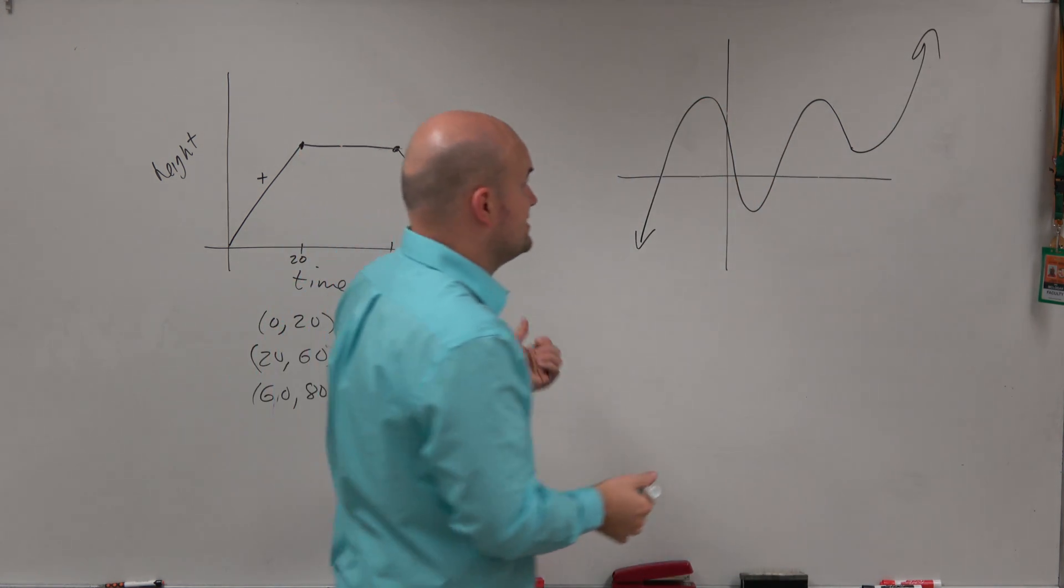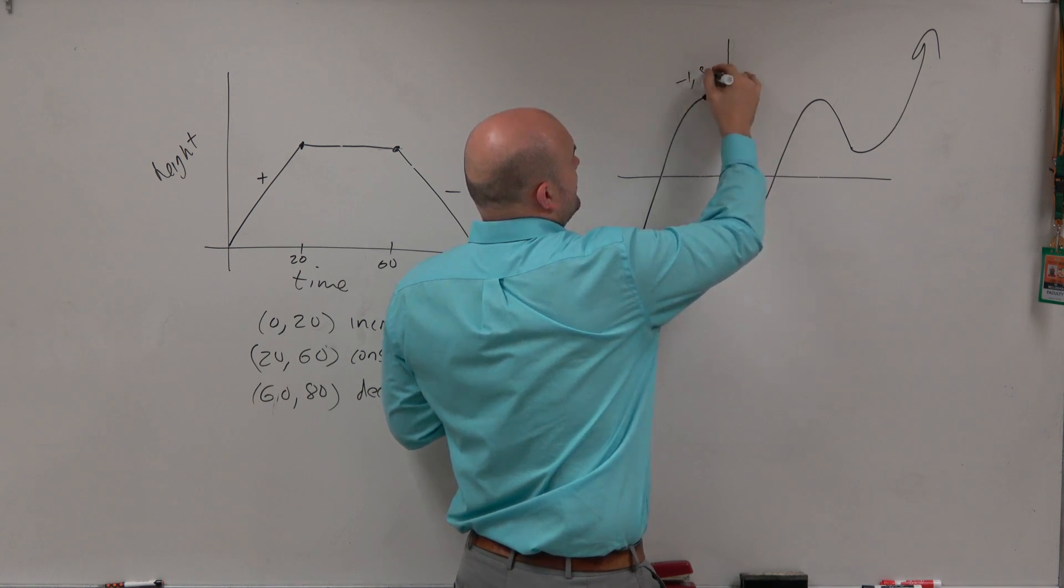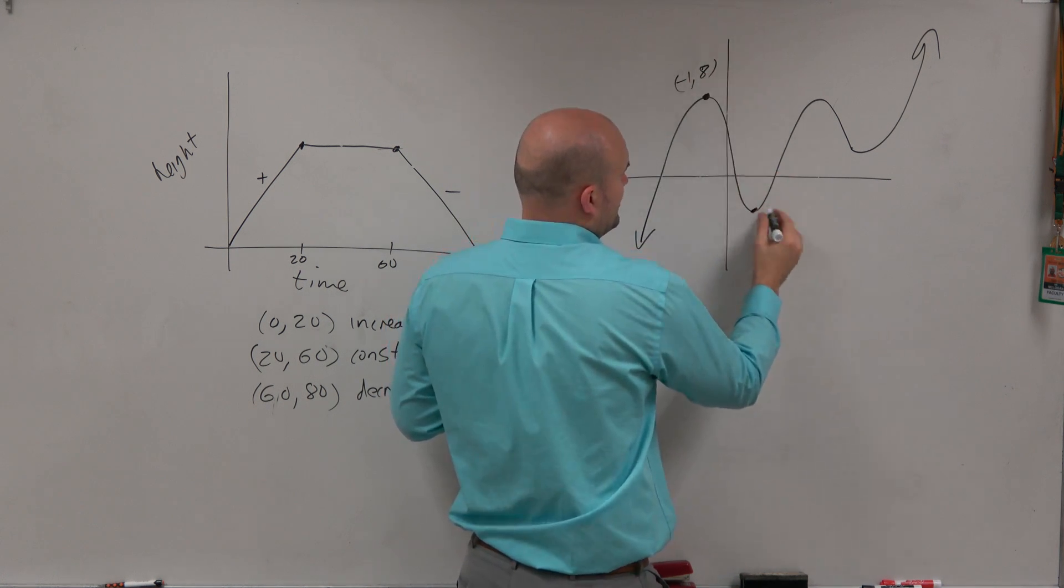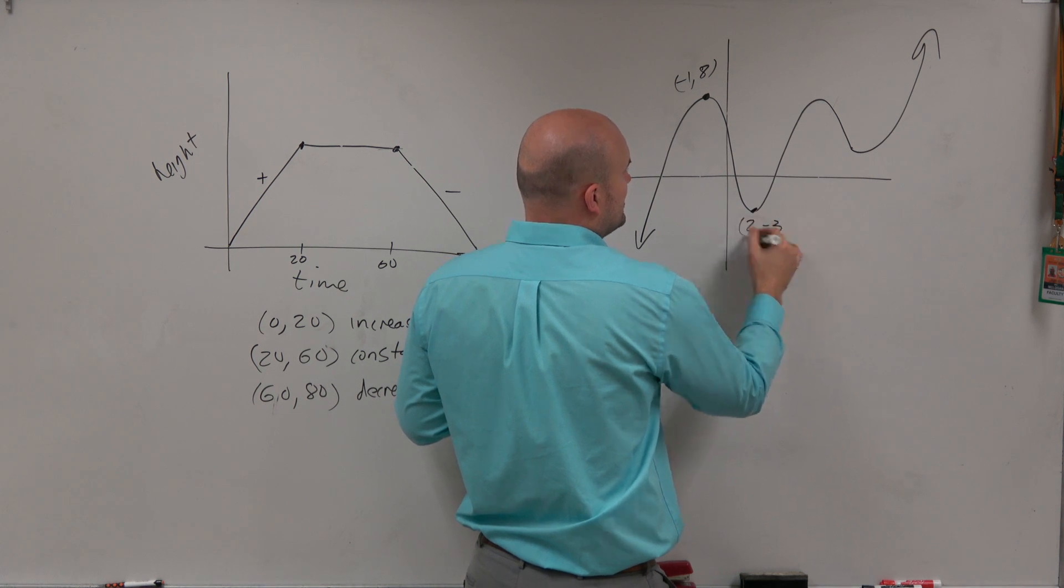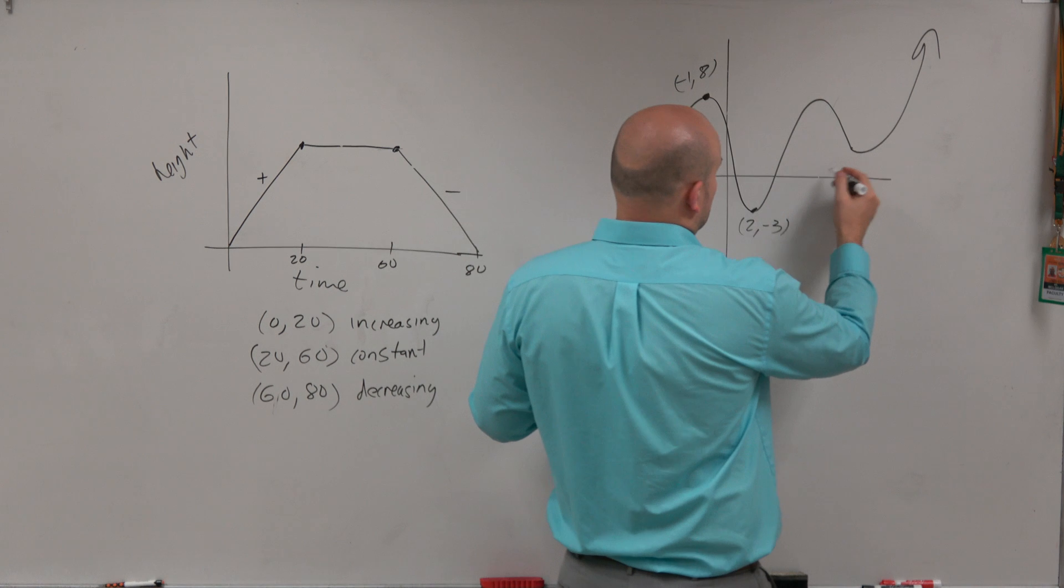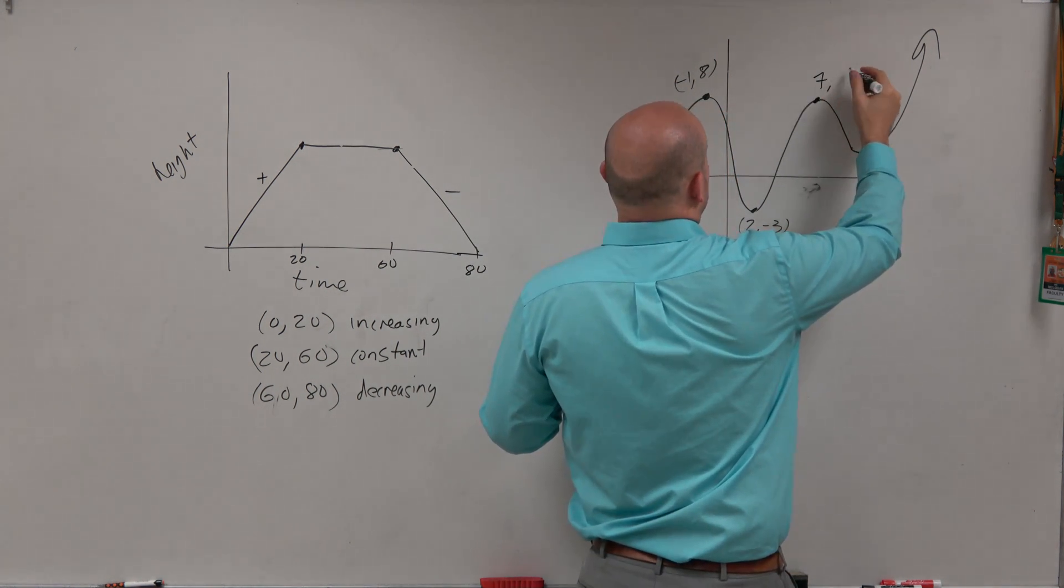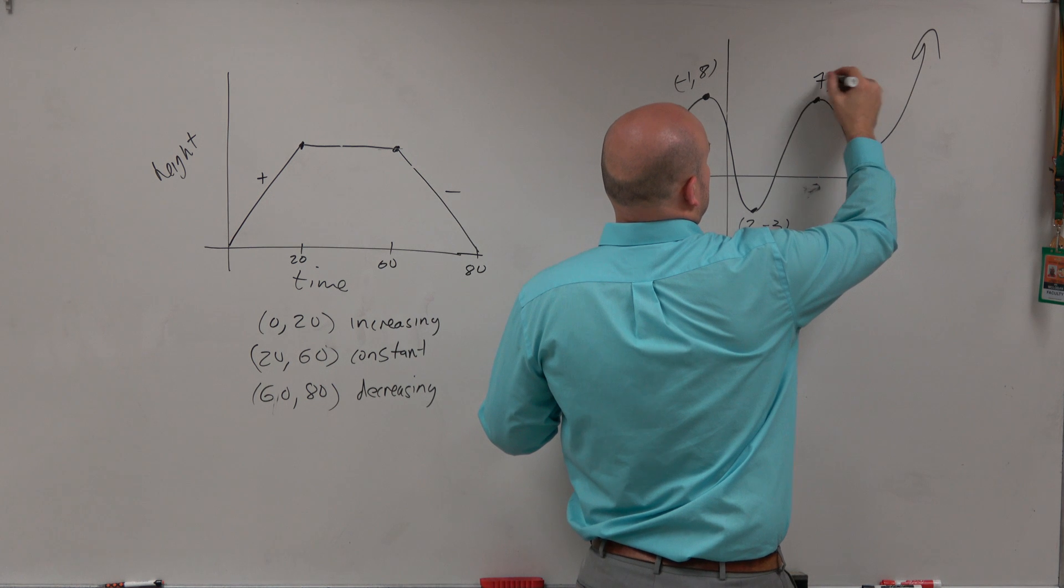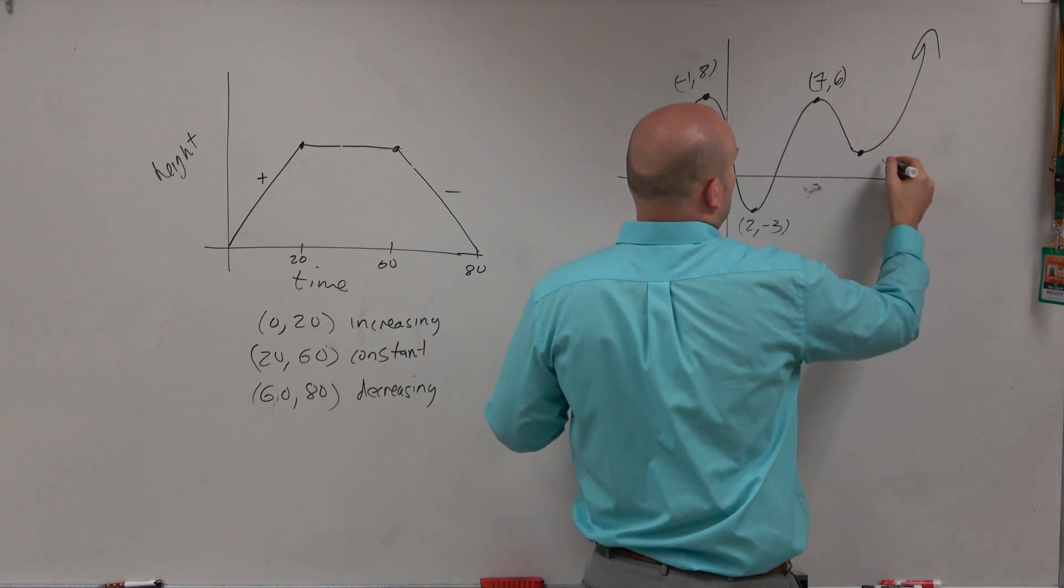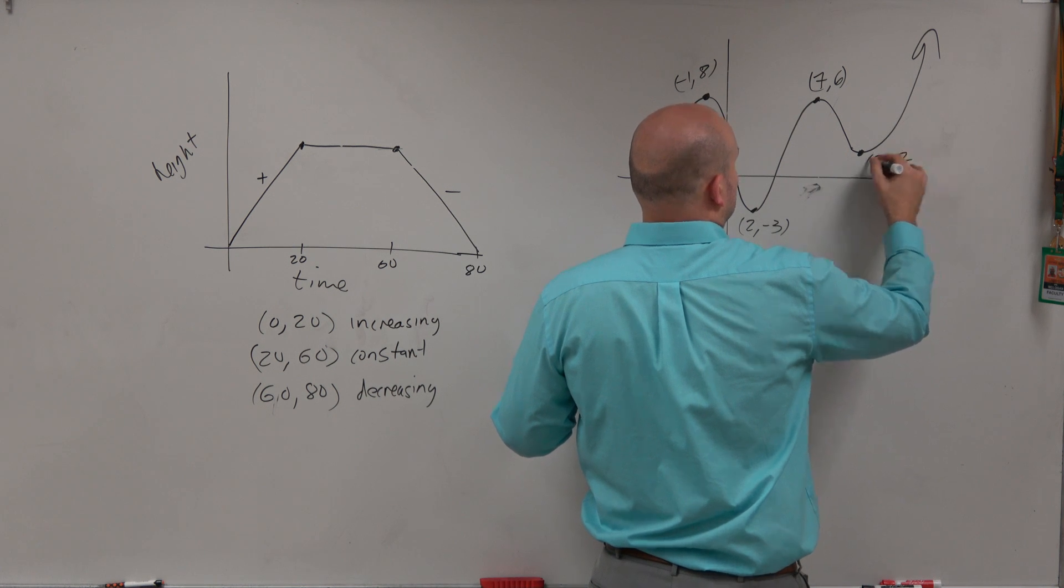So now, usually when you see a graph like this, we'll label the points. Let's call this negative 1, 8. Here we're going to be at 2, comma, negative 3. And again, I'm just making up some random points here to kind of prove my point. Let's say this point here is 7, comma, 6. And this point here is going to be 8, comma, 2.